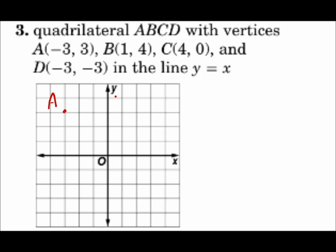B is at 1, 4. C is 4, 0. D is negative 3, negative 3. I connect those dots. This is the quadrilateral that will be reflected in the line y equals x.